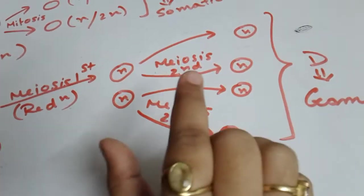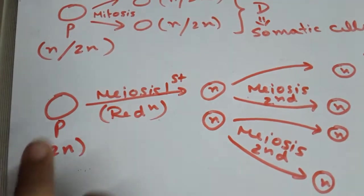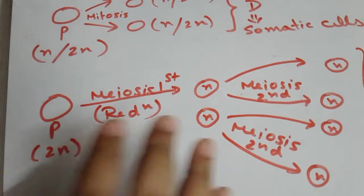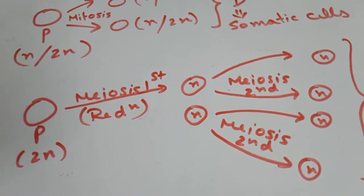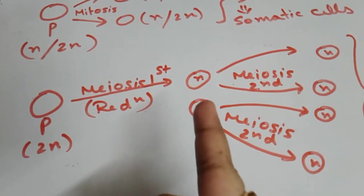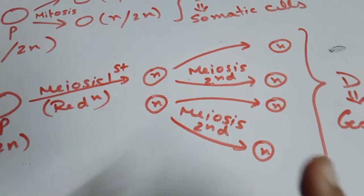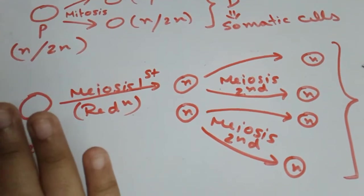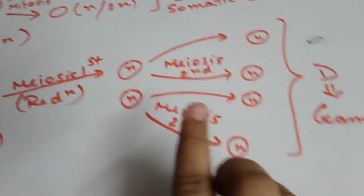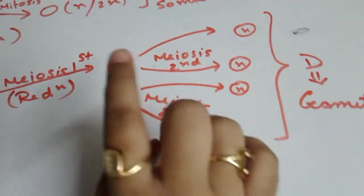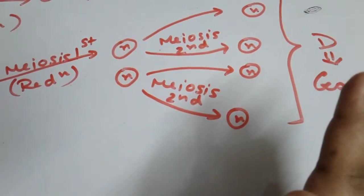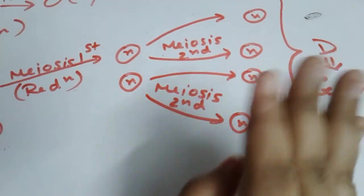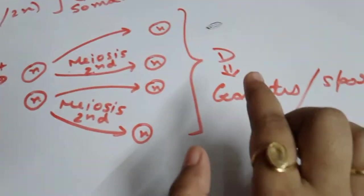In meiosis one, the parent cell with 2n diploid ploidy undergoes reductional division, producing two daughter cells with half the ploidy level — that is, haploid (n). To maintain this ploidy level and the amount of DNA passed on, meiosis two takes place, which is similar to mitosis. It divides the two daughter cells into four daughter cells, maintaining the ploidy level and chromosome and DNA content.